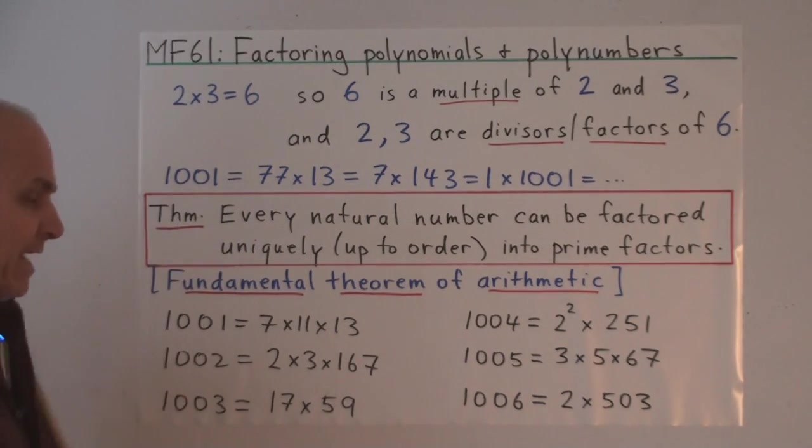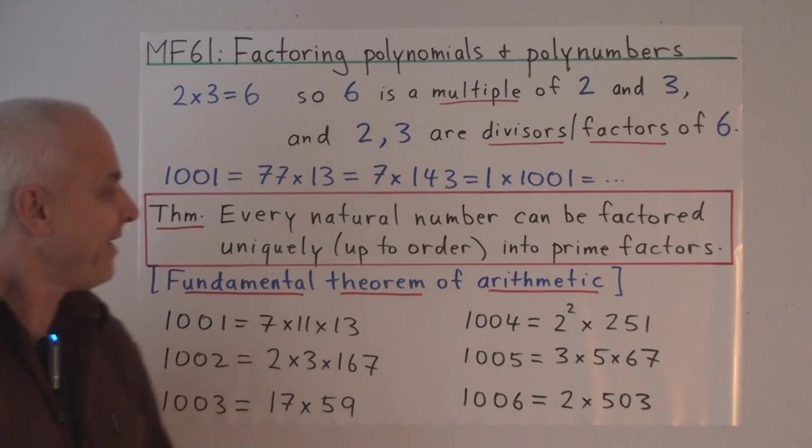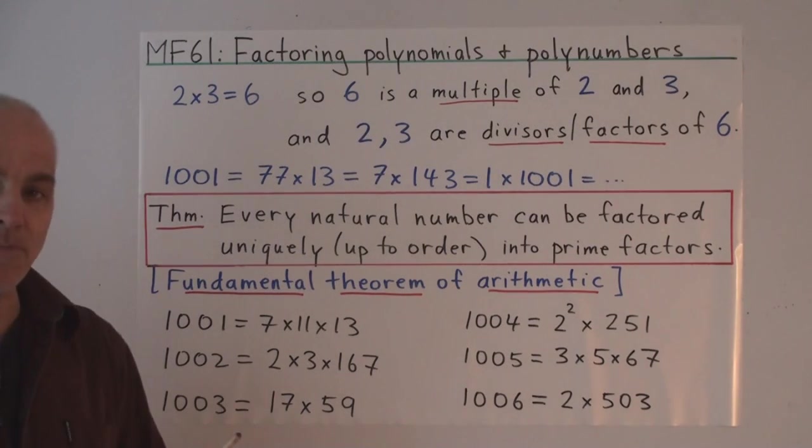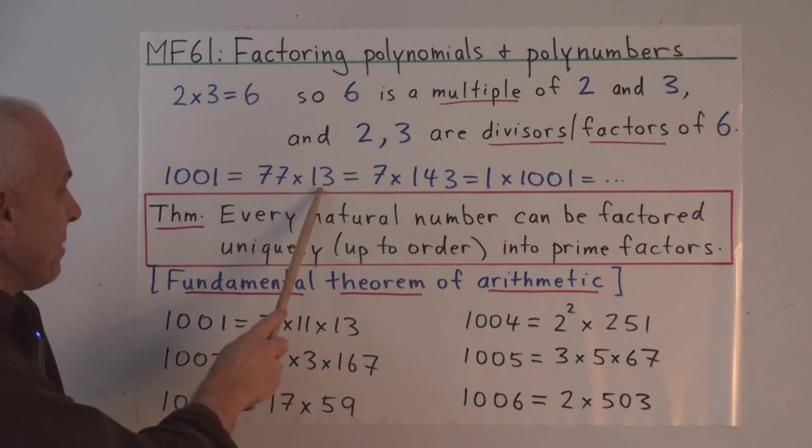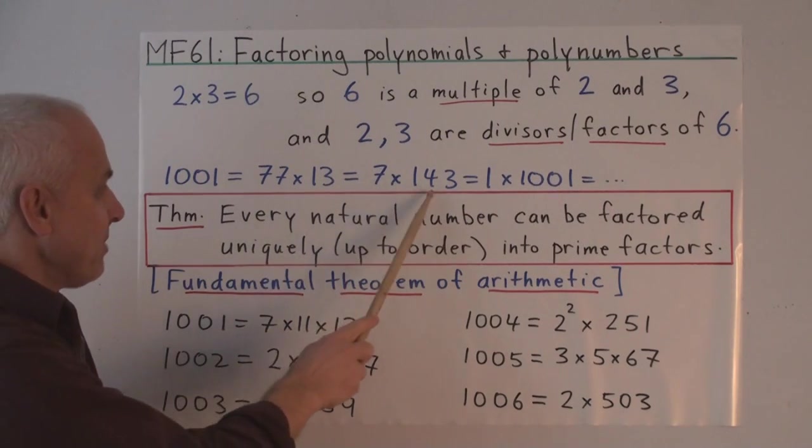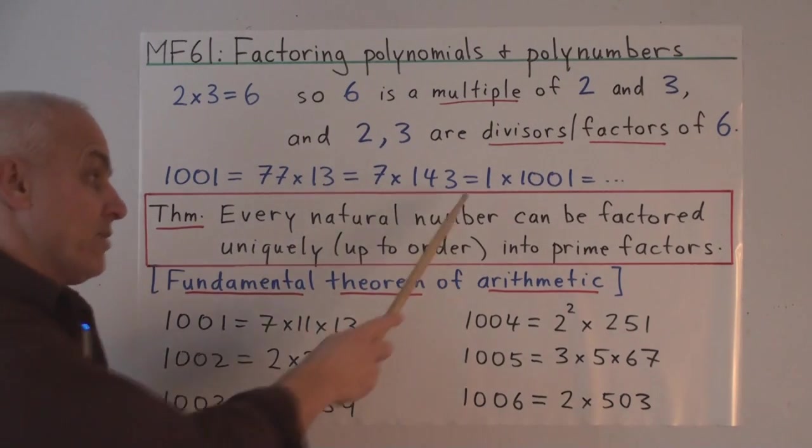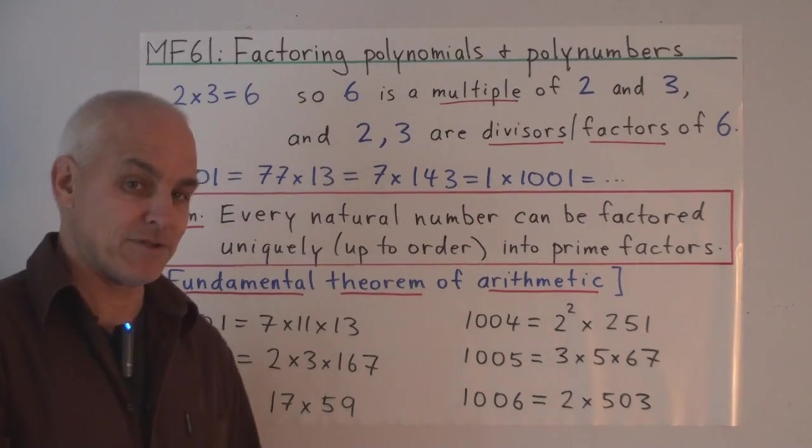If we take a bigger number, like say 1001, then it can be factored in a number of different ways. It can be written 77 times 13, or 7 times 143, or as 1 times 1001. That's also a factorization.